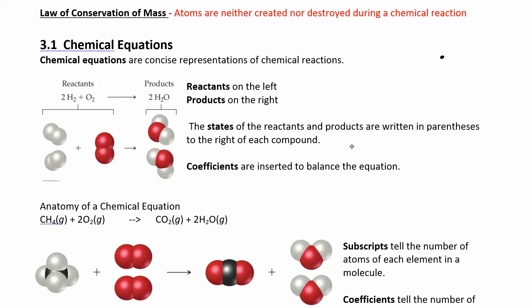Sometimes you'll have the state of the reactants and products indicated — whether it's a solid, liquid, gas, or aqueous. If it's a solid you'll see an (s), a liquid is (l), gas is (g), and (aq) means aqueous, meaning it's dissolved in water. Those four state representations don't really matter when you're balancing — they'll be more important later on, especially in chapter 4.